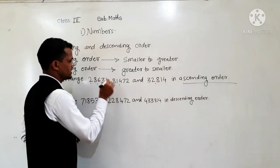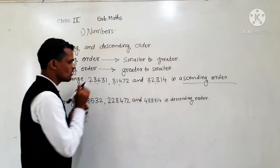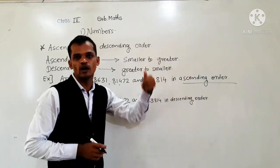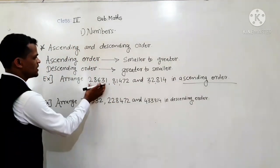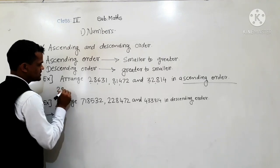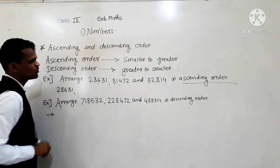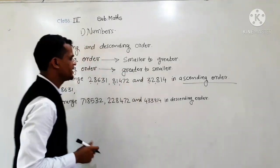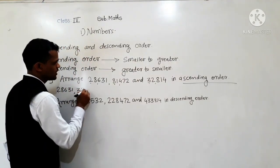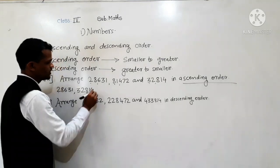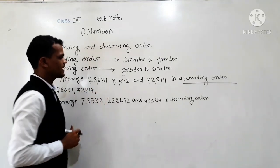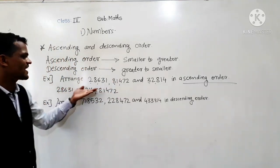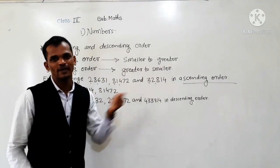At the 10,000 place, we have 2, 8, and 3. The smallest digit is 2, so in ascending order we write 28,631 first. Greater than 2 is 3 at the 10,000 place, so next we write 32,814. And at last we write 81,472. So these numbers are arranged in ascending order, meaning small to big order.